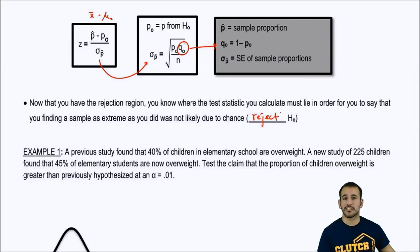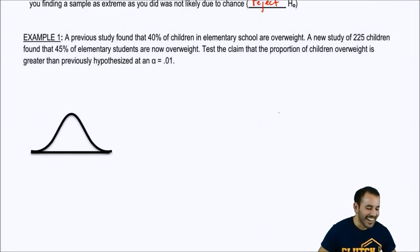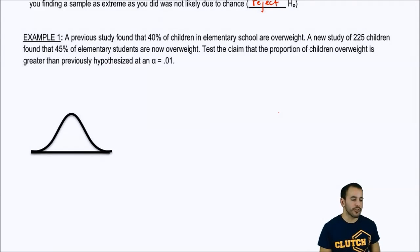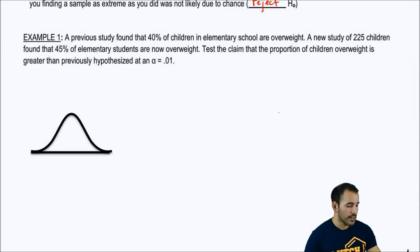This is the third time I've said this, so it should kind of be a repeat, and hopefully it sinks in pretty well. So, let's do our first example. A previous study found that 40% of children in elementary school are overweight. A new study of 225 children found that 45% of elementary students are now overweight. Test the claim that the proportion of children overweight is greater than previously hypothesized at an alpha of 0.01. So, we have this established null status quo of the percent of elementary school children who are overweight, right? And what is that? That's that 40%, right?